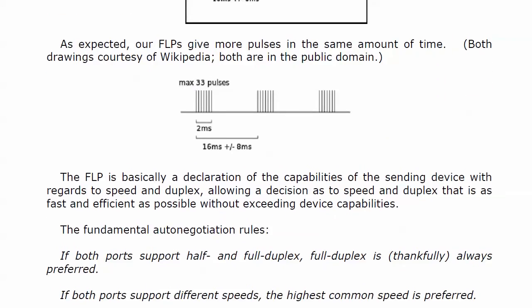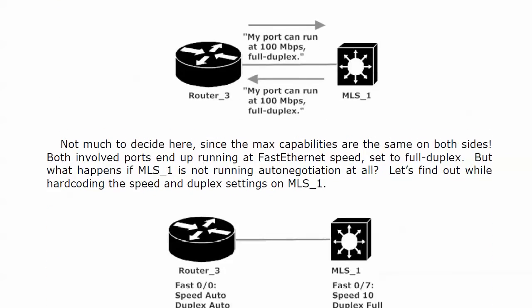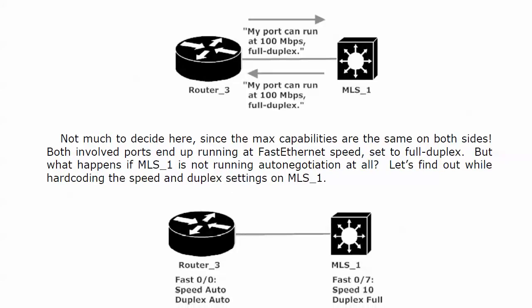Here are the fundamental auto-negotiation rules. If both ports support half and full duplex, full duplex is preferred — that makes life a lot easier. Also, if both ports support different speeds, the highest common speed is preferred. By default both ports were running auto speed and auto duplex, both announcing they can run at 100 meg and support full duplex. With matching capabilities on both sides, both ports run at fast ethernet speed and full duplex.